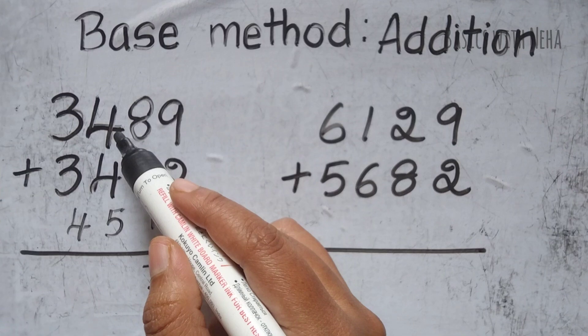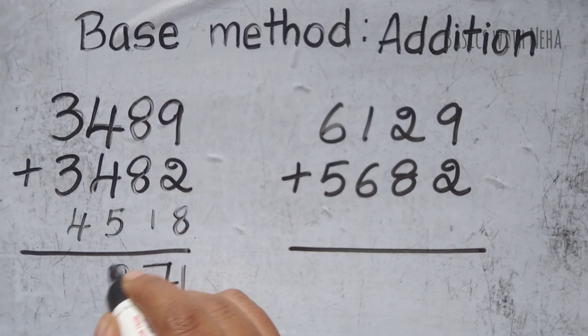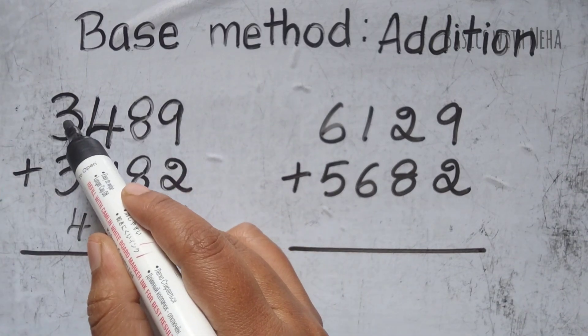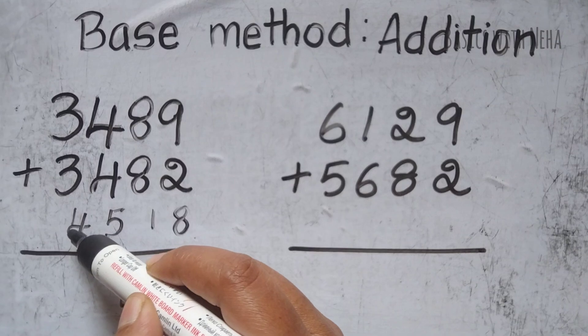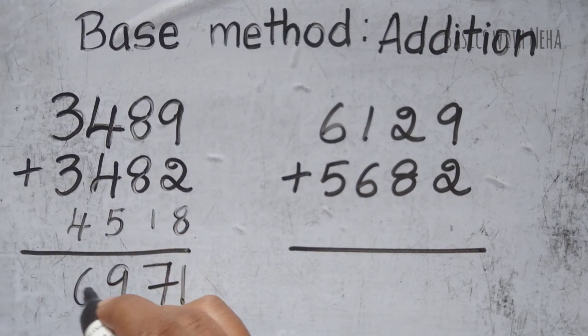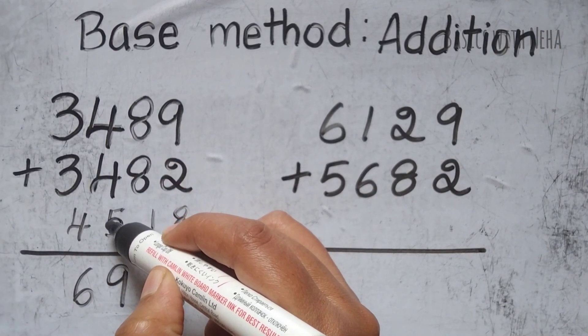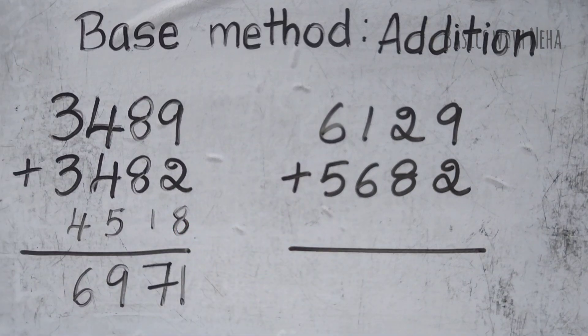5 minus 4 is 1. 1 on 10 is 9. 3 plus 4 is 7. I have to minus 1 which will be 6 because I have operated the subtraction here with borrowing. So my final answer is 6971.